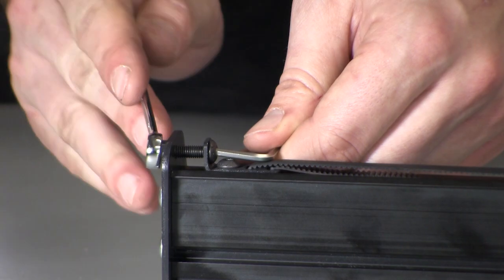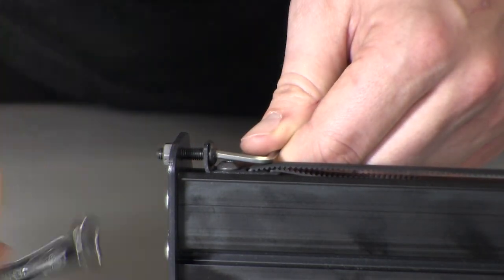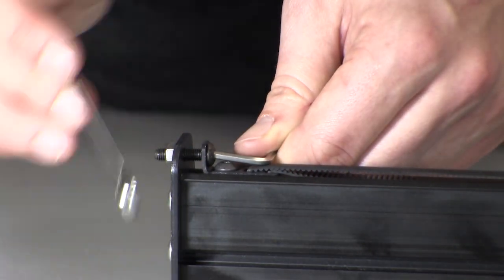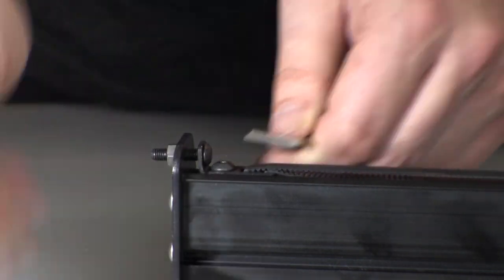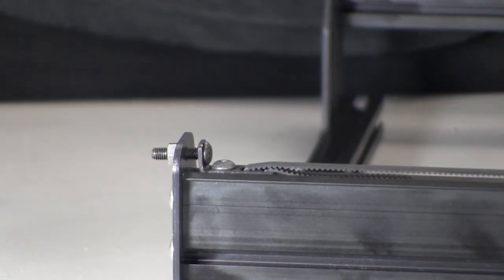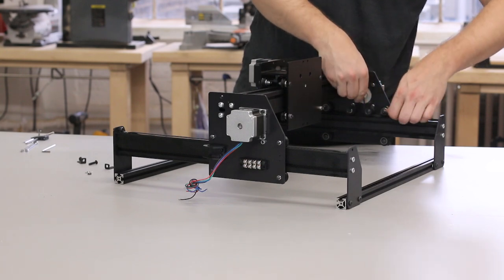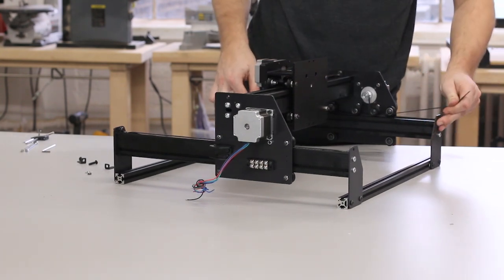Just like the X axis, we'll use this belt clip to tension the belt. Tighten it enough to get the belt taut like a guitar string. You'll repeat this whole process on the other piece of Y maker slide with the rest of the belting that came with your kit. After you've tensioned your second Y axis belt, make sure that the second Y belt is the same tension as the first one.